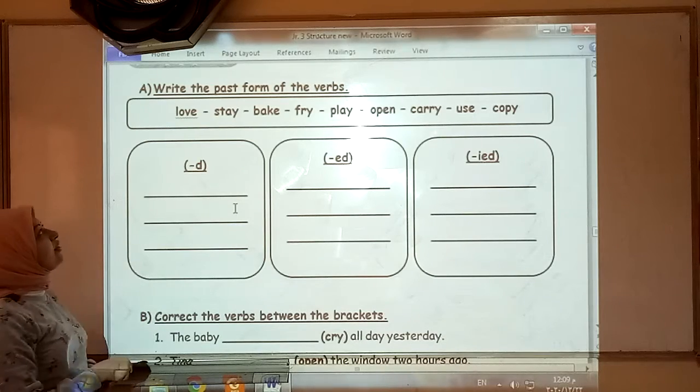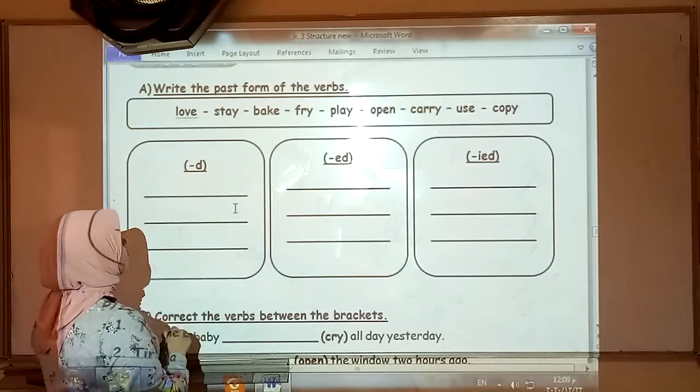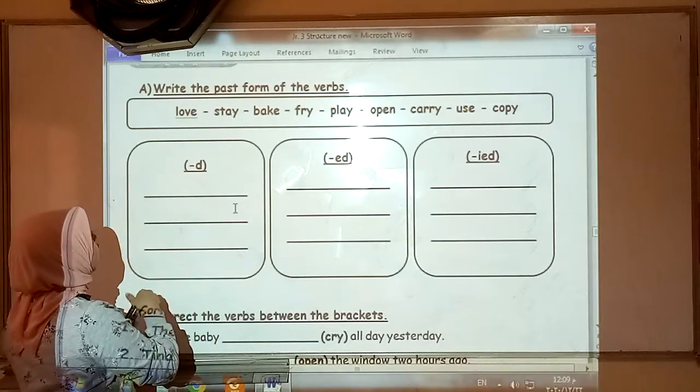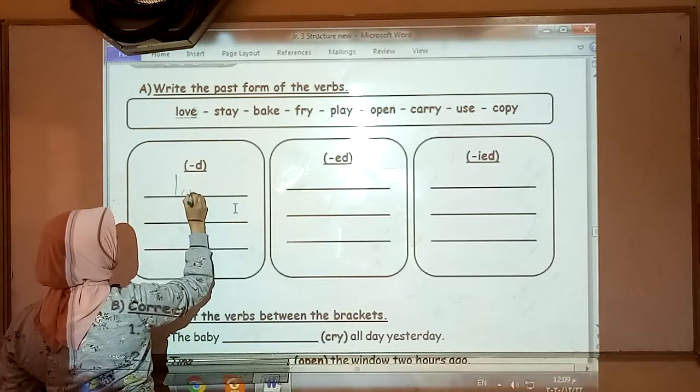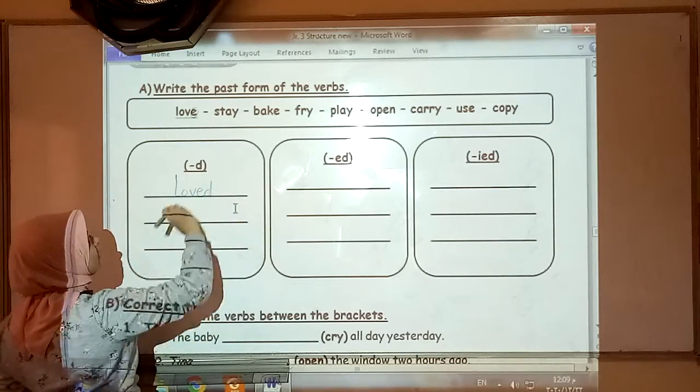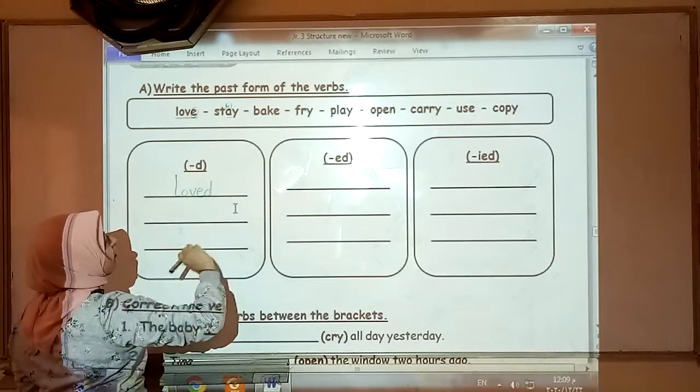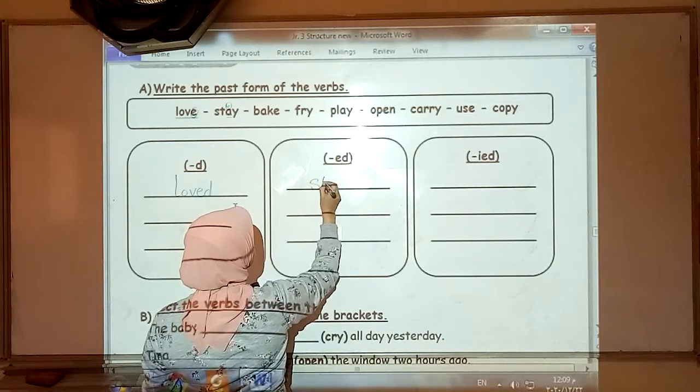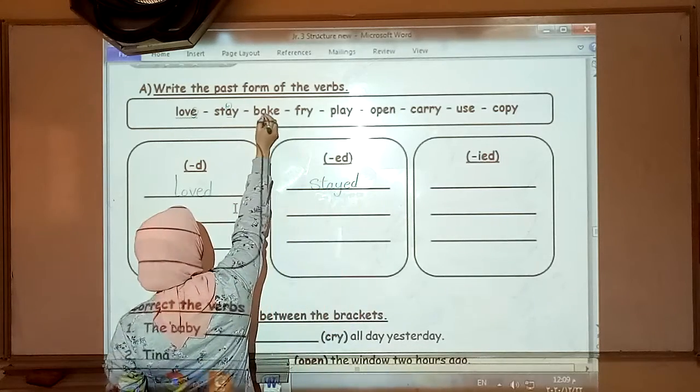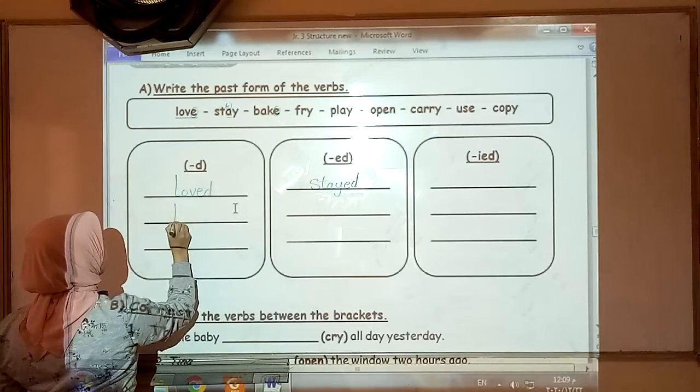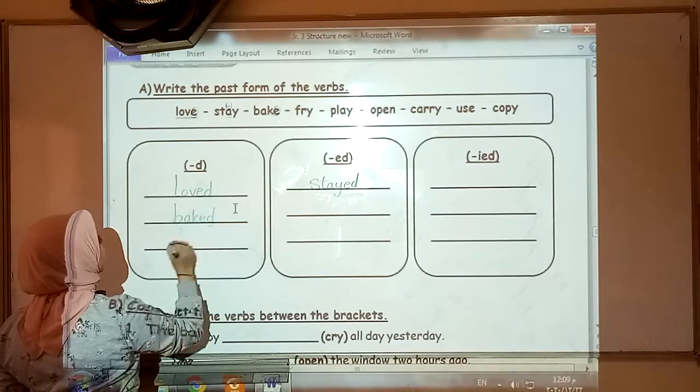As we did before, write the past form of the verb. Sort them in the correct box. Number one. Love. Ends in E. So we will add D only. Loved. Stay. Y, vowel. Keep the Y and put ED. Stayed. Bake. Ends in E. Baked. Add D only.